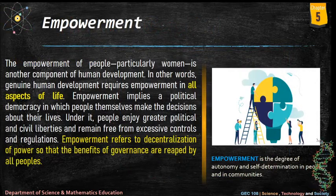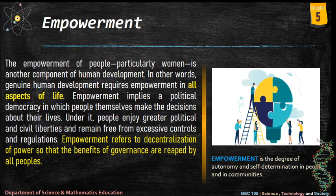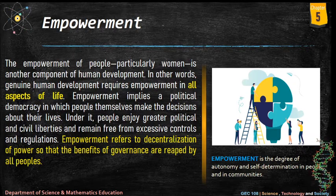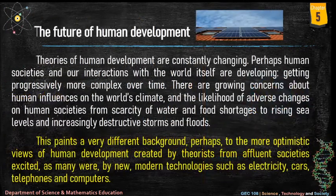Empowerment of people, particularly women, is another component of human development. Genuine human development requires empowerment in all aspects of life. Empowerment implies a political democracy in which people themselves make decisions about their lives. Under it, people enjoy greater political and civil liberties and remain free from excessive controls and regulations. Empowerment refers to decentralization of power so that the benefits of governance are reaped by all peoples. It is the degree of autonomy and self-determination in people and in communities.